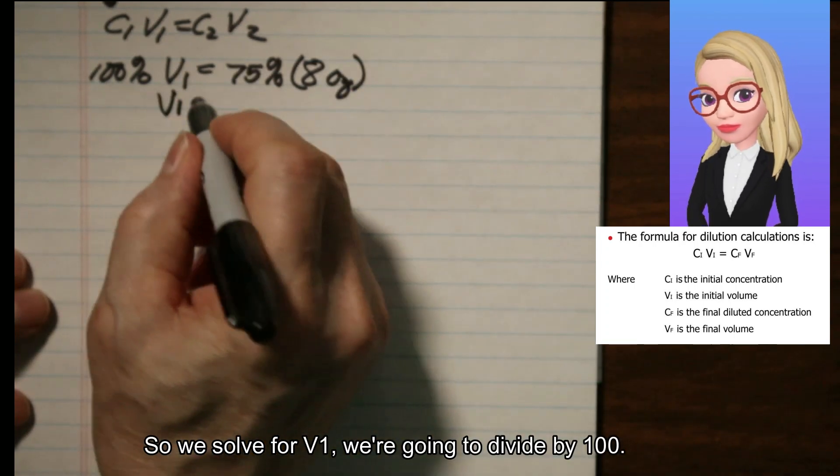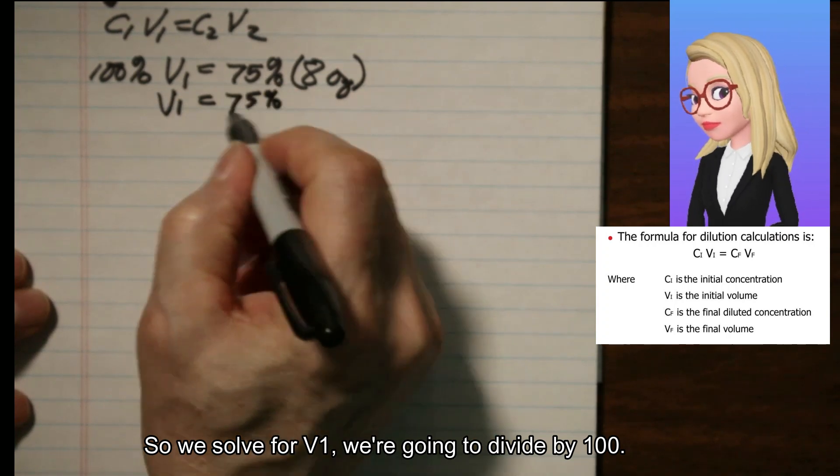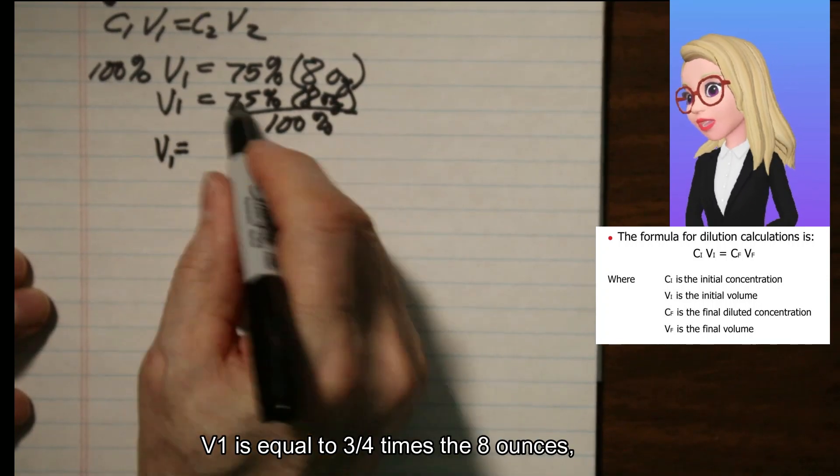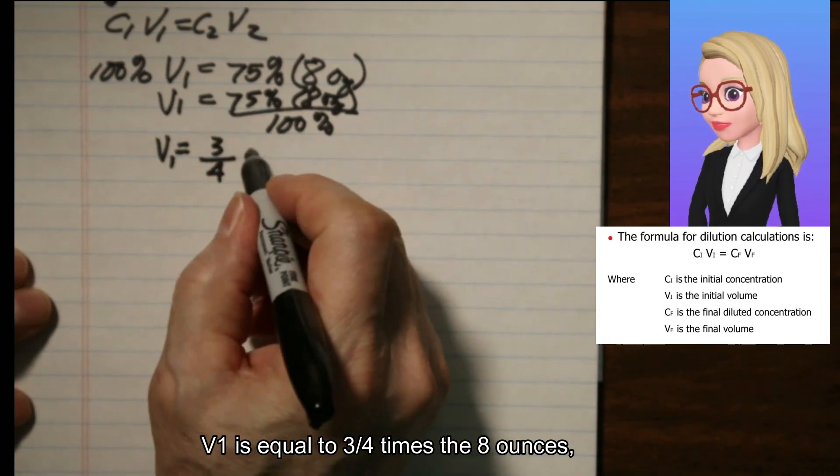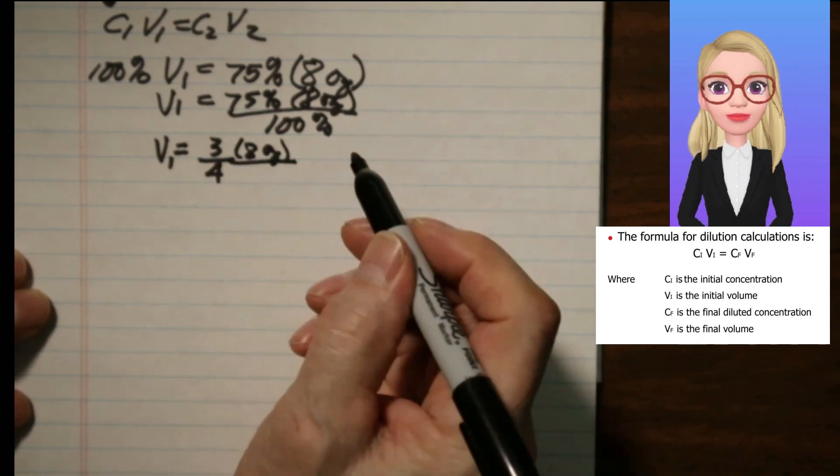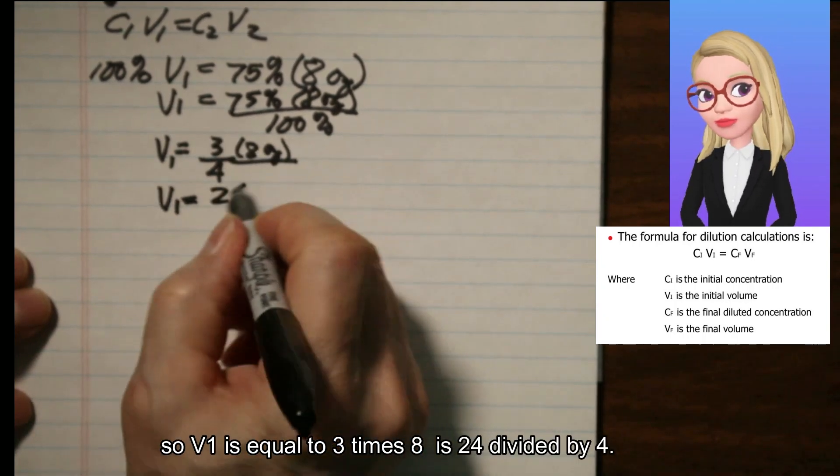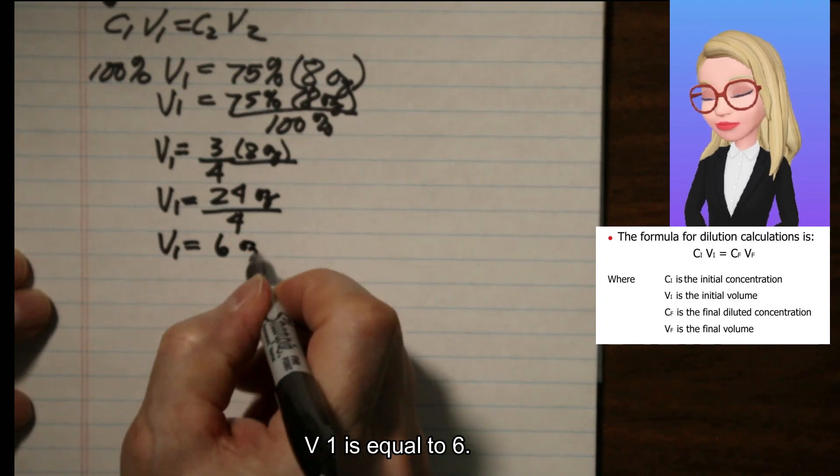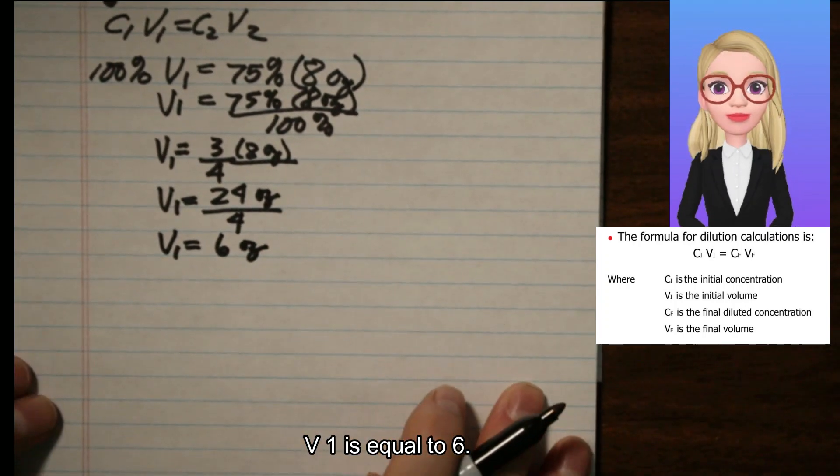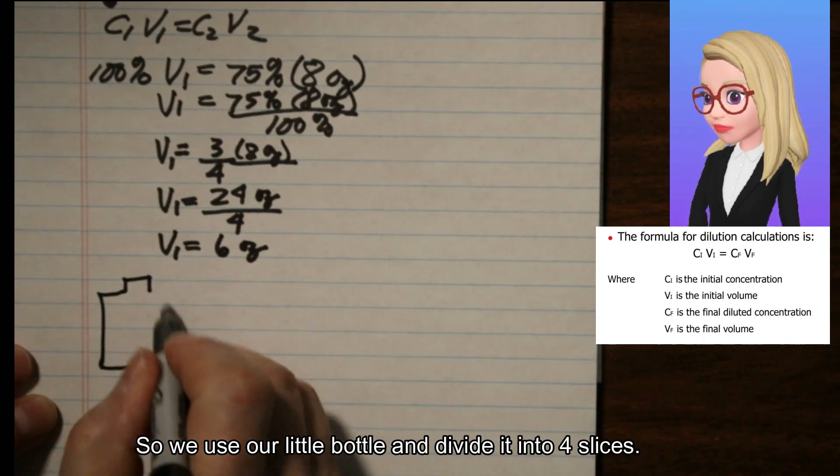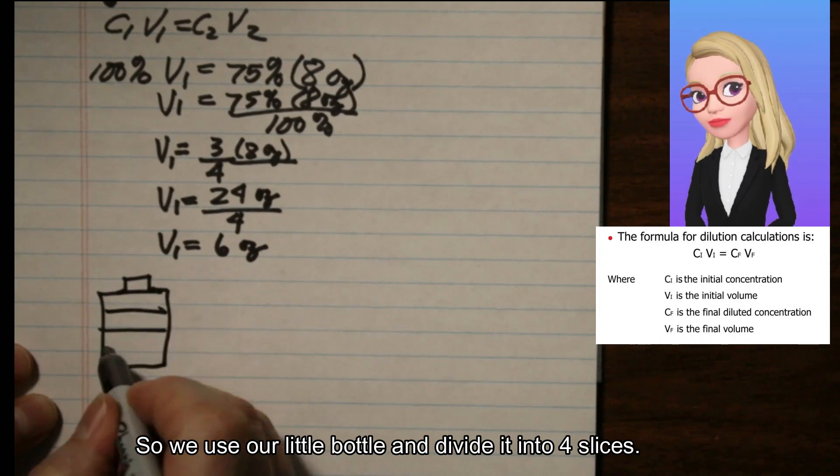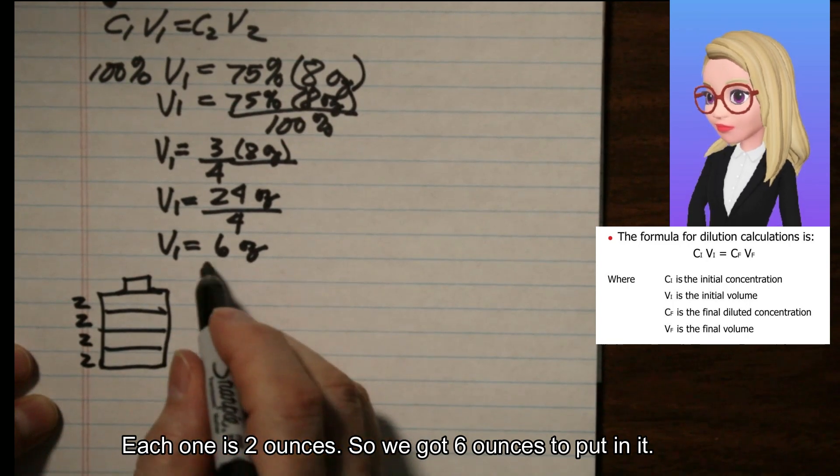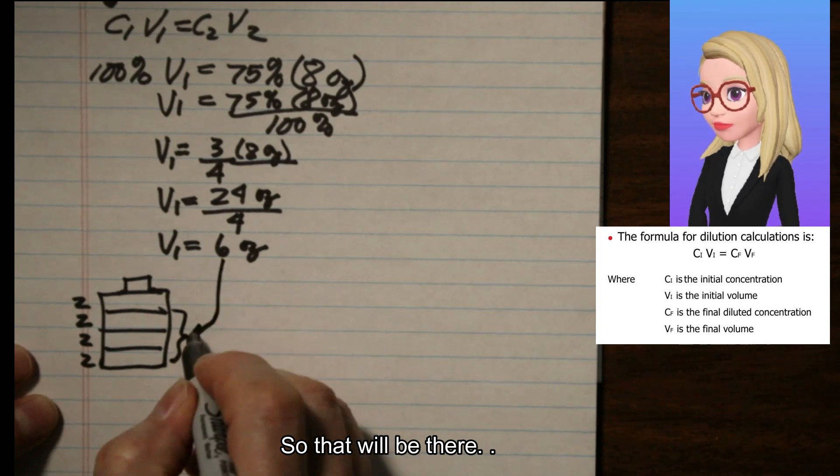So we solve for V1. We're going to divide by 100. V1 is equal to 3 fourths times the 8 ounces. So V1 is equal to 24 divided by 4, V1 is equal to 6 oz. So we use our little bottle and divide it into 4 slices. Each one is 2 ounces. So we got 6 ounces to put in it.